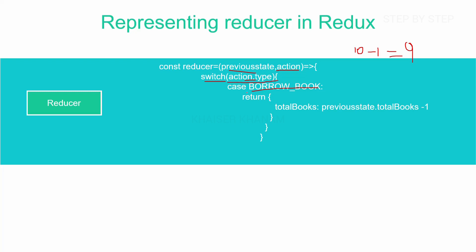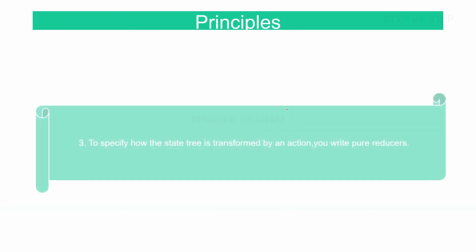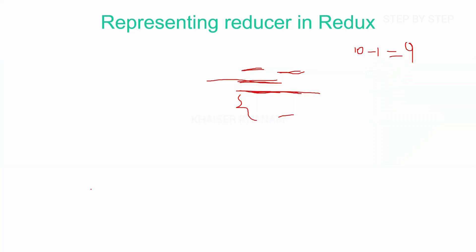We take action.type and match for the cases. We can have multiple cases — borrow book, return book, and so on — based on the action dispatched. The matched case returns the result as the new state. Previously I was having 10 books; now I borrowed one, so my new state will be 9 books. This is how we represent a reducer in Redux. Take a screenshot or make a note of how actions and reducers are represented.